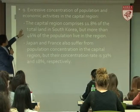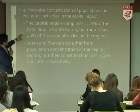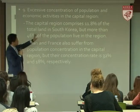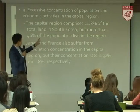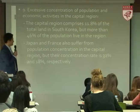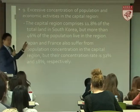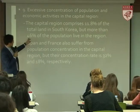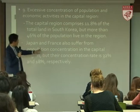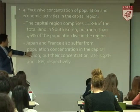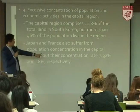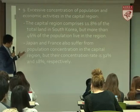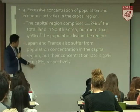There is an excessive concentration of population and economic activities in the capital region. The capital region comprises only about 12% of the total land in South Korea, but more than 46% of the population live there. Compare Korea's 46% with Japan at 32% and France at 18% — it is really, really concentrated.